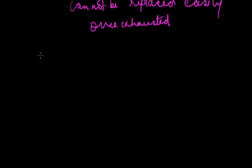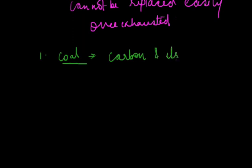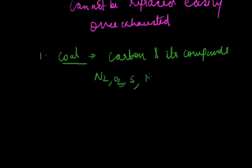The first and foremost important non-renewable energy source is coal. Coal contains carbon and its compounds — it is basically made of carbon and its compounds. The main content is carbon, but some minor amounts of nitrogen, oxygen, sulfur and hydrogen are also present. It also consists of some inorganic matter. Coal is one of the important fossil fuels.